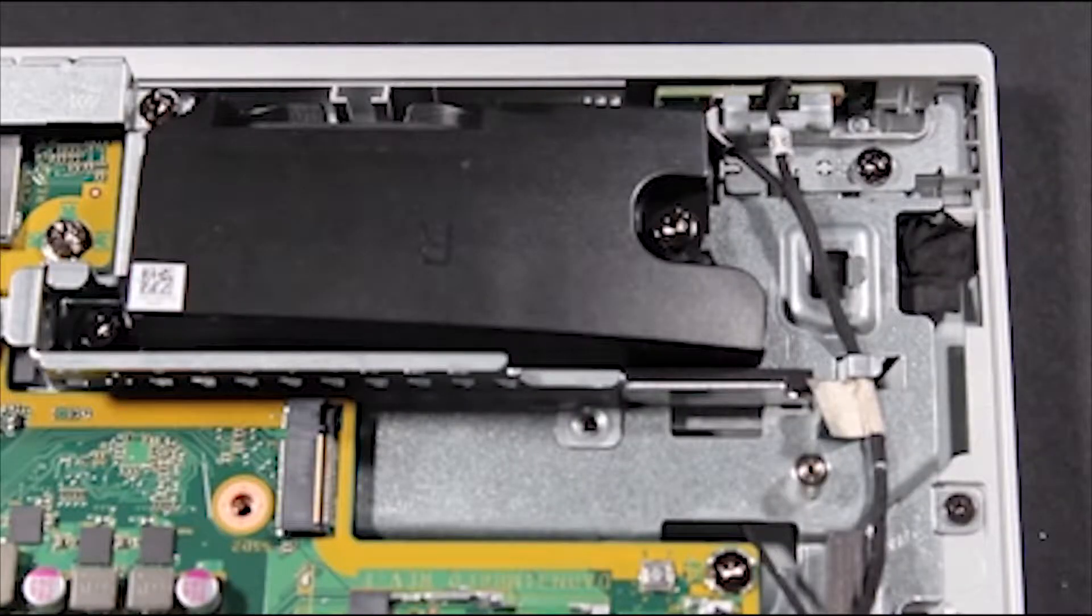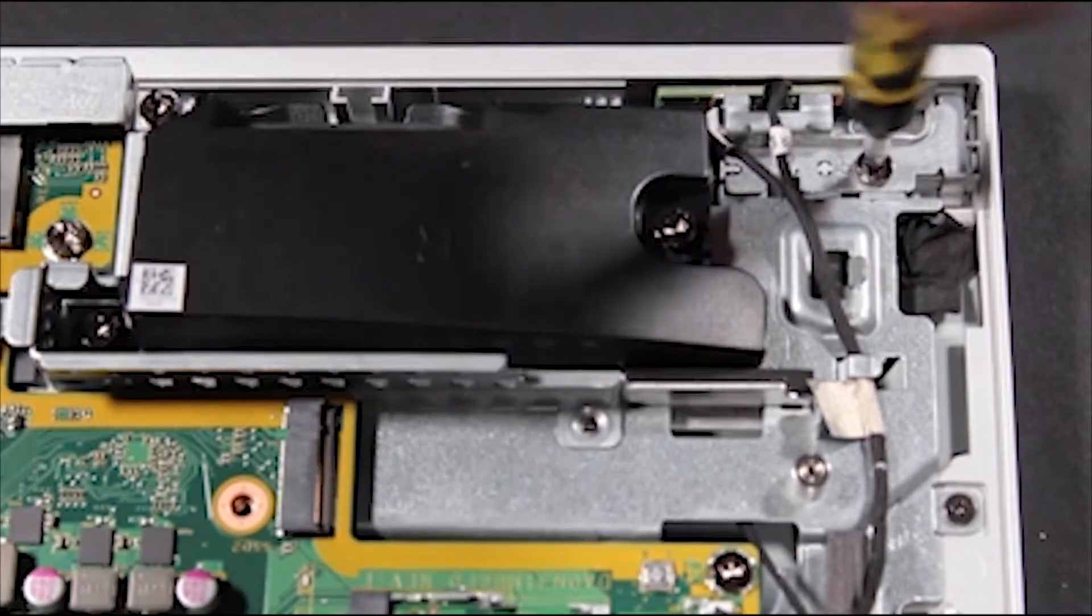Removal. Detach the Torx 15 screw that secures the power button board assembly to the panel assembly.